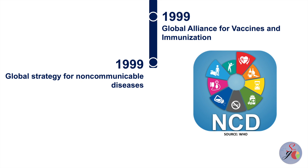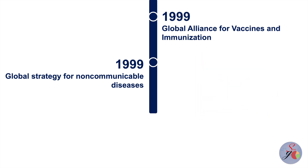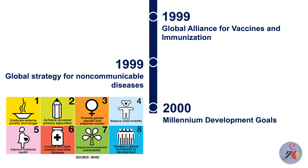In the same year, the first global strategy for the prevention and control of non-communicable diseases — including cancer, cardiovascular diseases, chronic respiratory diseases, and diabetes — was launched. At the Millennium Summit in September 2000, the largest gathering of world leaders in history adopted the UN Millennium Declaration, committing nations to a new global partnership to reduce extreme poverty and setting out a series of time-bound targets.